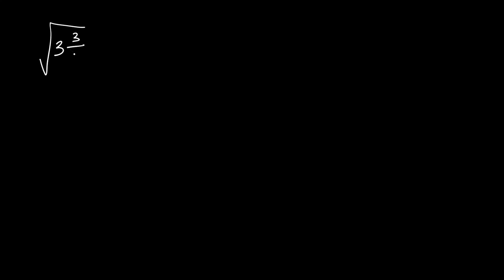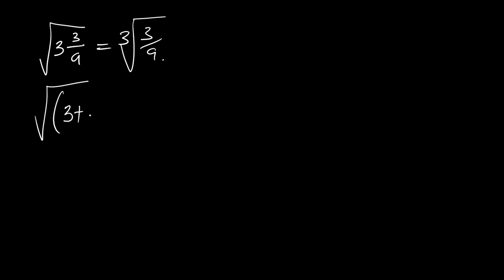To solve this problem, we have the square root of 3 and 3 all over A, equal to the square root of 3 times the square root of 3 all over A. This expression is a mixed fraction, so what we are going to do is bring it to the top. This is the same thing as the square root of 3 plus 3 all over A.